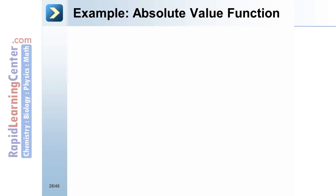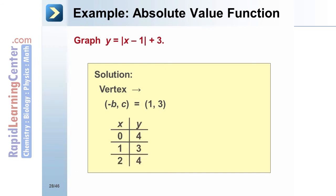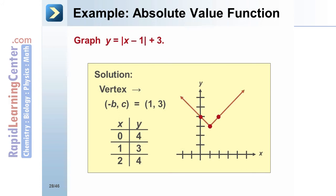Absolute Value Function Example: Graph y equals the absolute value of (x minus 1) plus 3. The vertex of the graph is (1, 3). Find a point to the left and the right of the vertex. The two resulting points are (0, 4) and (2, 4). Plot the three points: (0, 4), (1, 3), and (2, 4).